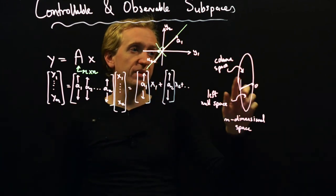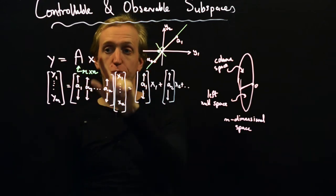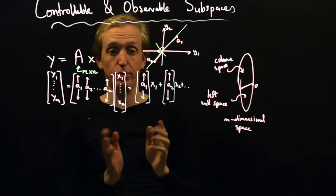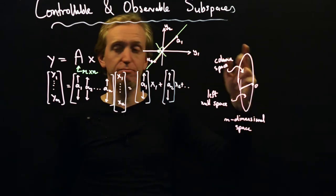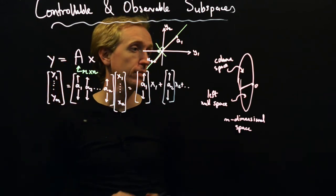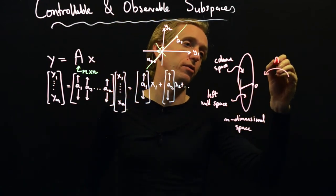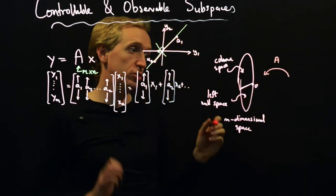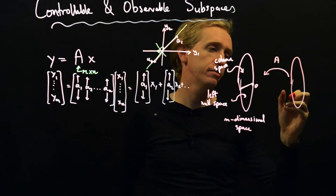The column space gives you the set of Y values for which this equation will have a solution. More generally, we have some subspace whose dimension is determined by the number of independent columns, corresponding to the set of possible Ys which have solutions to Y is equal to Ax. Our matrix A takes an input and turns it into an output — that's the output space. Now let's understand the input space similarly.